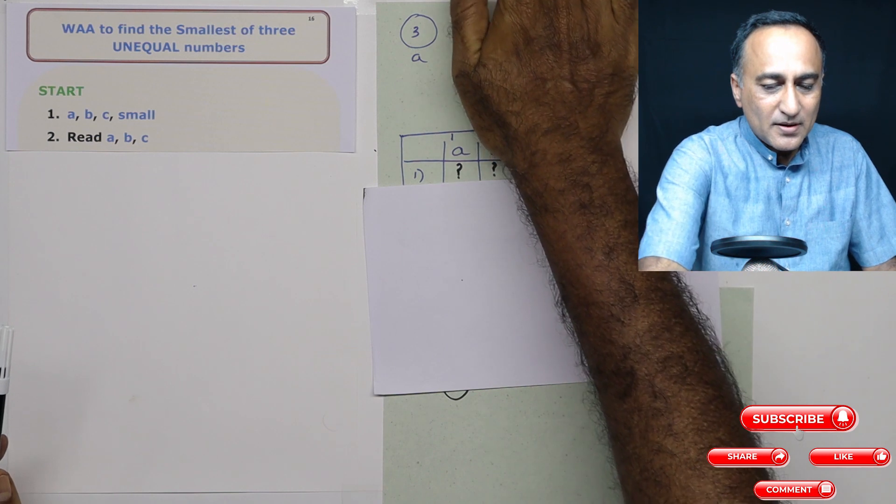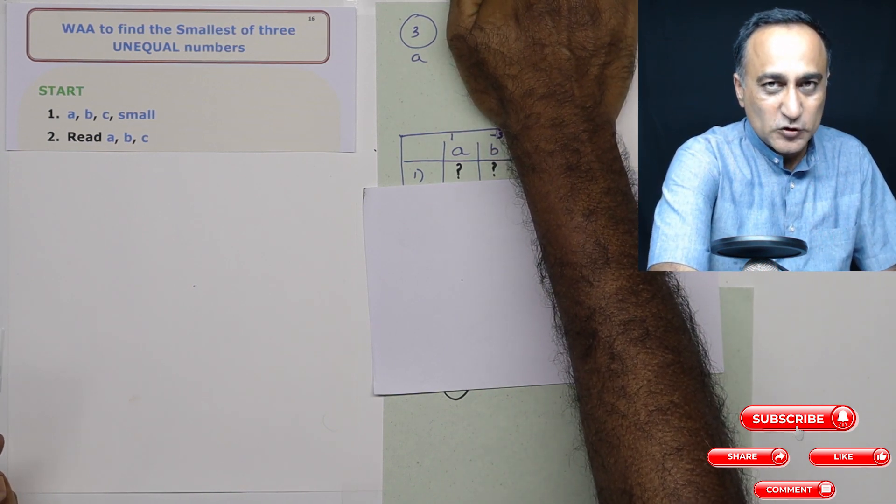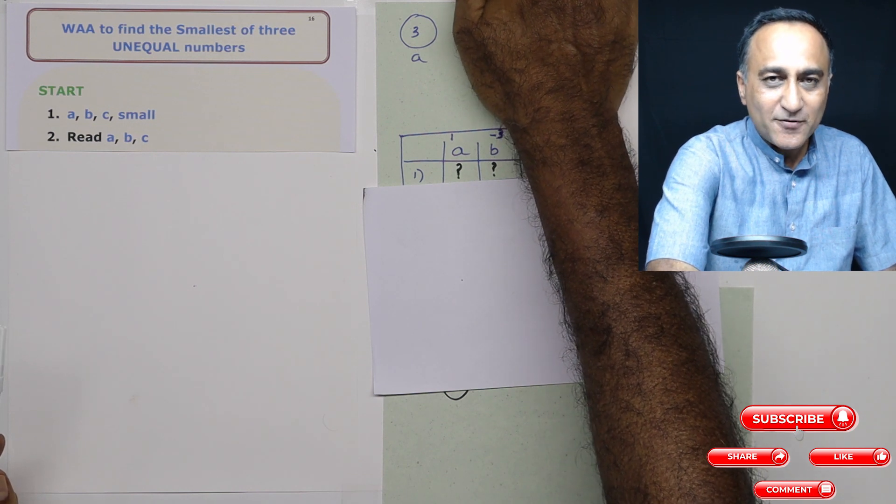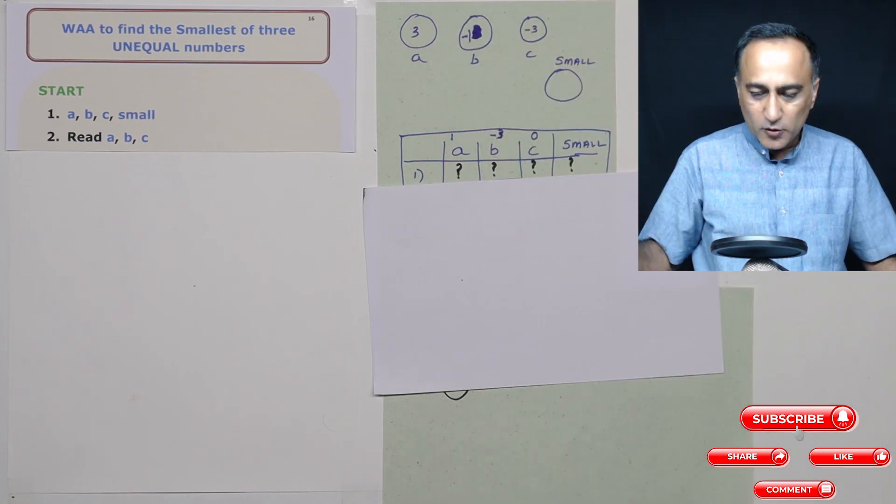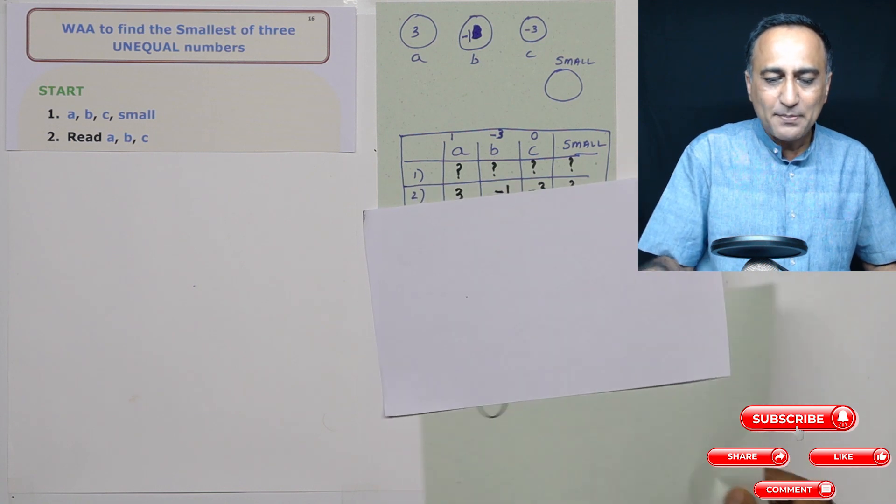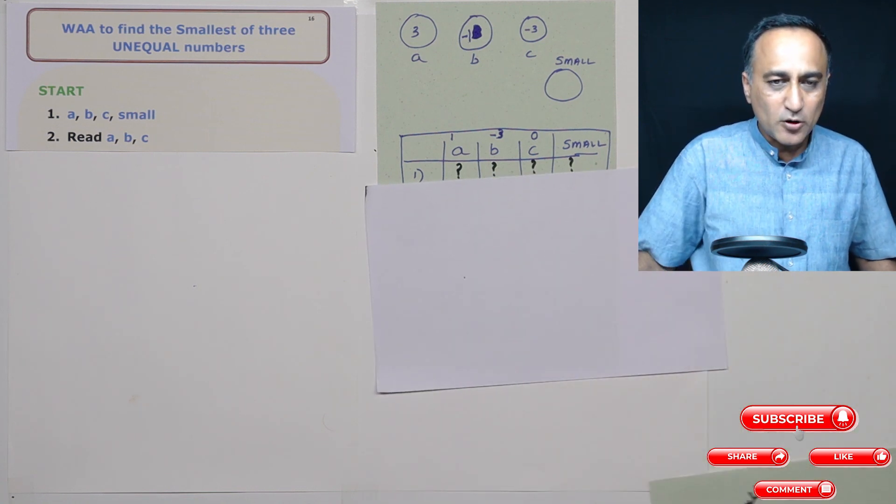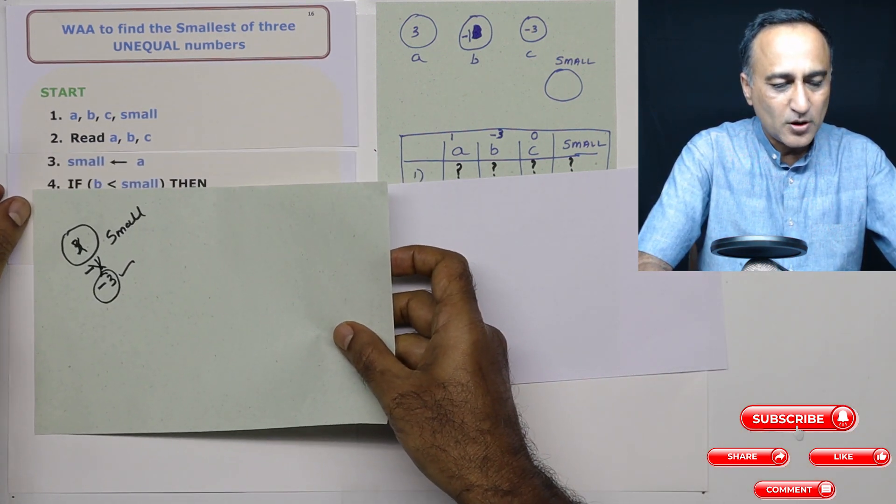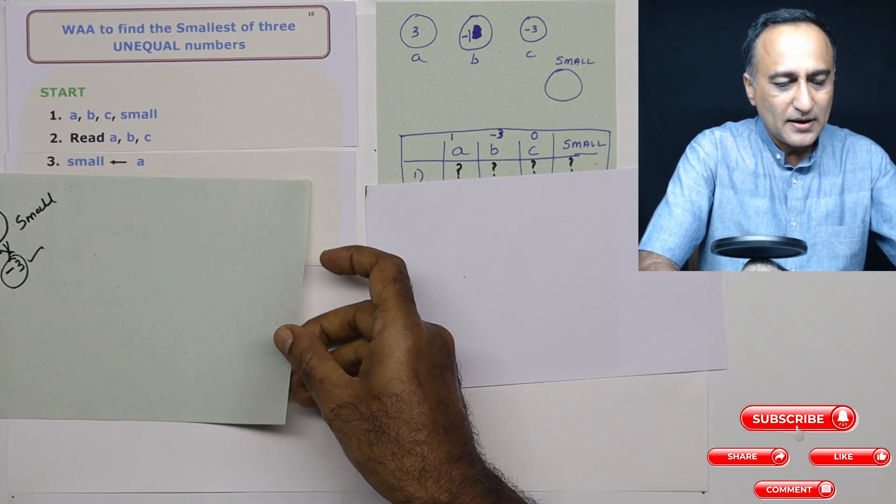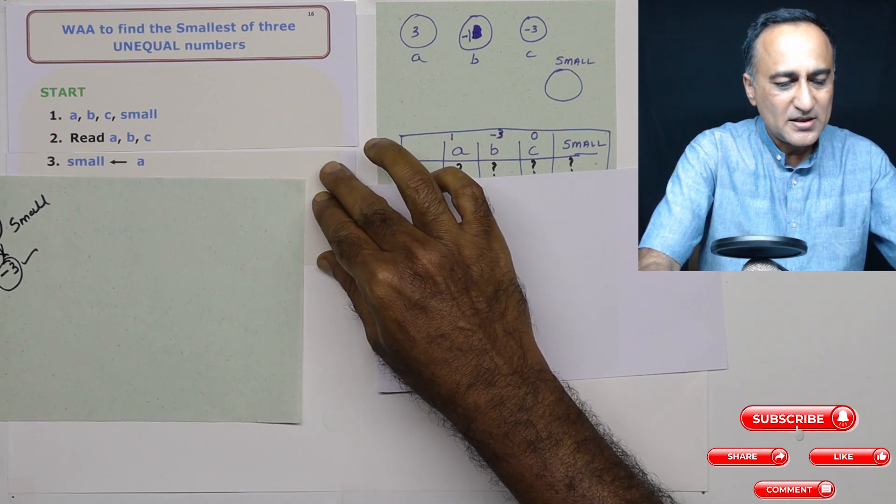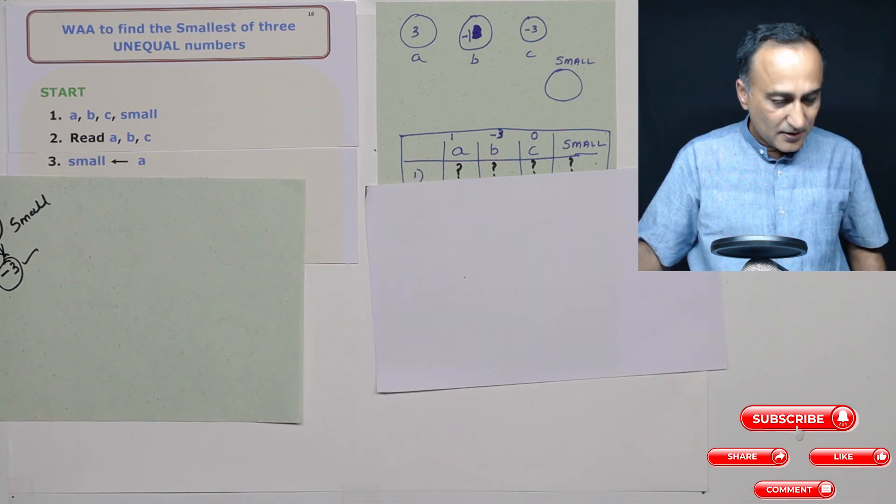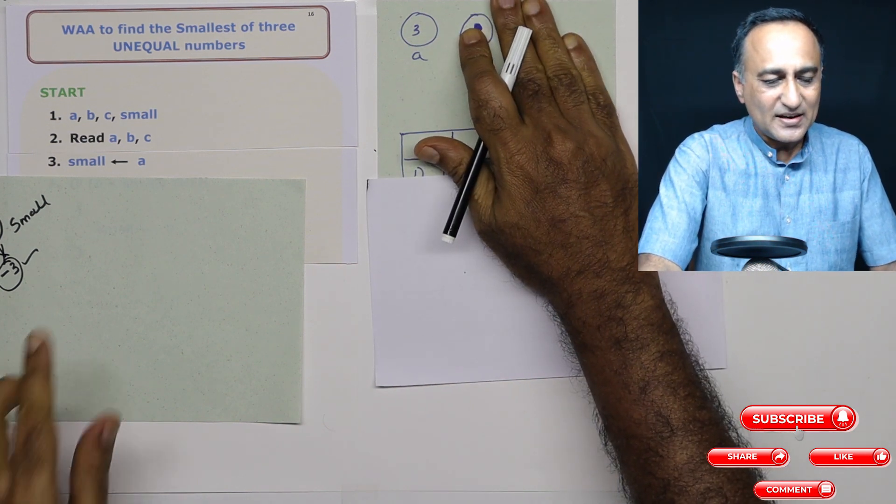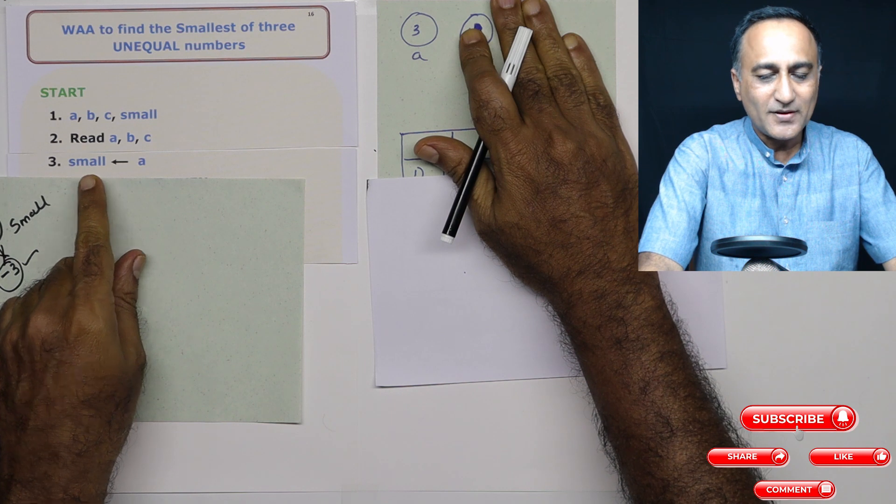Now, if you remember, I have not seen these two at this point. I am assuming I have not seen these two. So in the first step, I am simply going to assume that a happens to be the smallest. I am not going to look at b and c. I am simply making the assumption that a is the smallest. So at this point, a happens to be the smallest number, and small is given the value of 3.